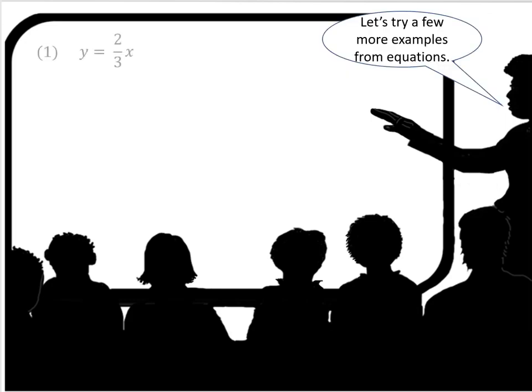Let's try a few more examples from equations. y equals 2 thirds x. The constant of proportionality is 2 thirds.